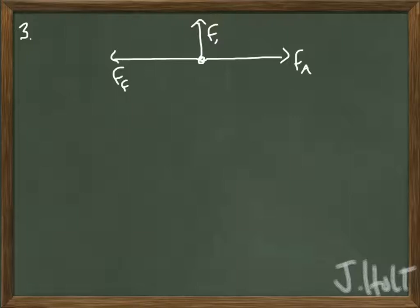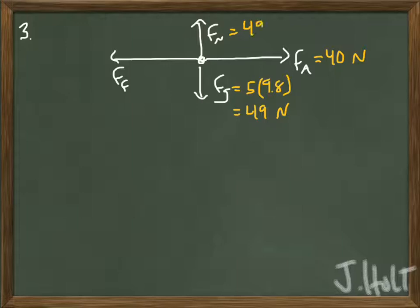In this problem, we're going to set up our free body diagram. We do have an applied force, and we also have friction. We don't know what the force of gravity is, but we can find that, because we have the mass. The normal force is going to be the same as the force of gravity.